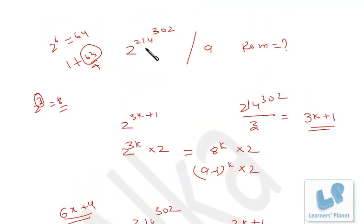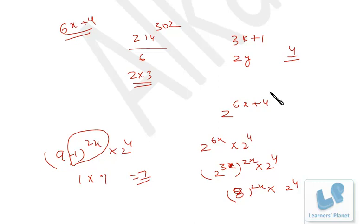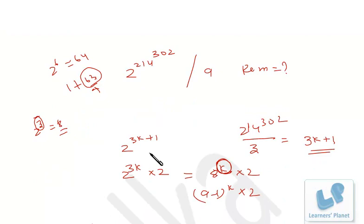To recap: for 2 raised to (214^302), if you try to find the remainder by 3 and k is unknown, your answer may be wrong. To avoid that, we convert the power into an even power by finding the remainder when divided by 6, giving the 6x+4 format. Following these steps gives 7 as the answer. Watch the other sessions on number system — conceptually clear, this type of problem should not take more than 30 to 40 seconds.